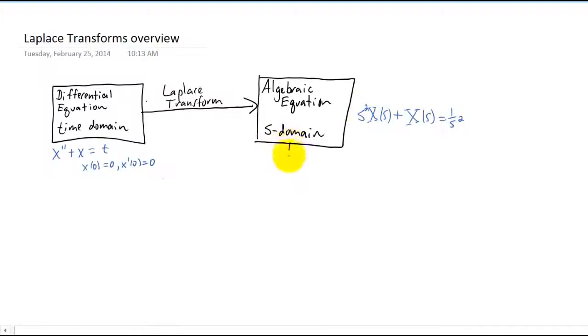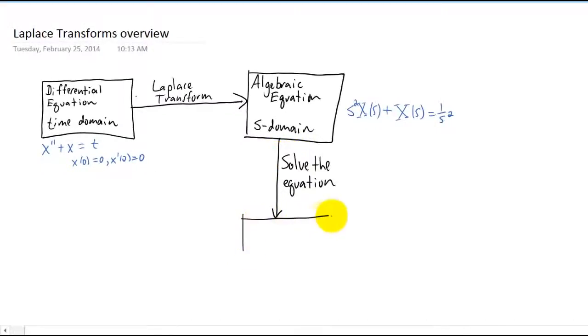Well what we can do with an algebraic equation is we can solve the algebraic equation for the variable capital X, which is a function of s. In this example, if we solve this equation for capital X of s, we get an equation that looks something like this, and now that that equation is solved we can actually take it and transform that solution back to our time domain.